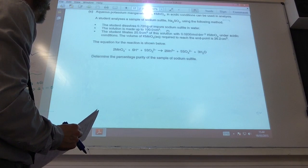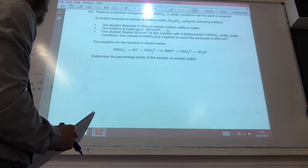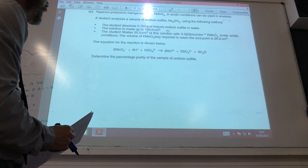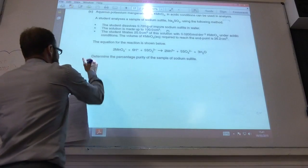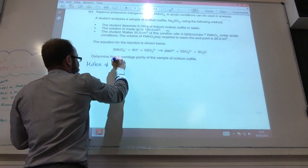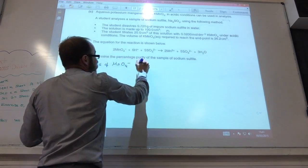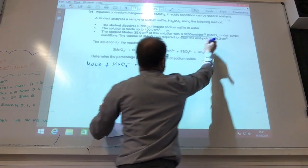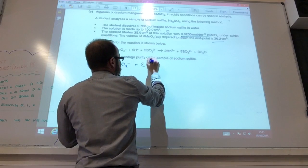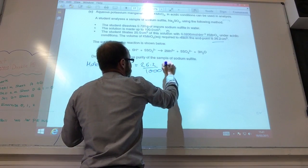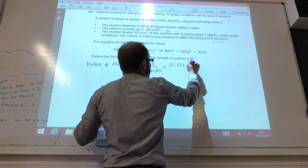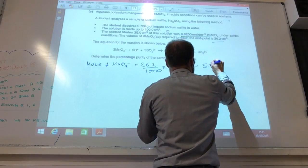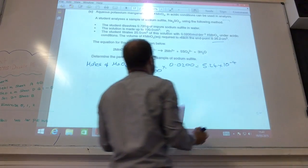Well, first of all, I've got an impure sodium sulfite sample. Make it up to 100 centimeters cubed. What am I going to do? Well, first of all, we'll do moles of MnO4 minus. I have got a concentration and I've got a volume. So it's 26.2 over a thousand times 1.02200. Moles is therefore going to be 5.24 times 10 to the minus 4.